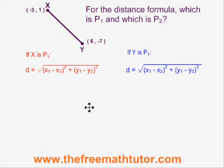But which is point 1, therefore which is x1 and which is y1? Let's find out whether there is any difference by plugging point 1, negative 3, 1 and point 2, 6, negative 7 into the distance formula and then trying it again, changing which is point 1 and which is point 2.